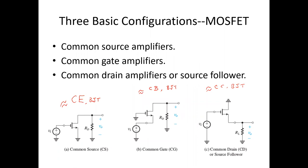Now let us consider the three basic configurations of the MOSFET. These are the Common Source Amplifier, Common Gate Amplifier, and Common Drain Amplifier, also known as the source follower. The Common Source Amplifier is shown here wherein the source is common to both the input and output side, and hence it is known as the Common Source Amplifier.